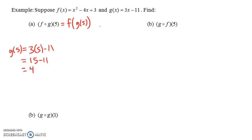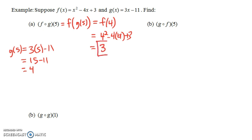So g of 5 is 4. F of g of 5 is like f of 4. We have a formula for f, so let's plug in 4: 4 squared minus 4 times 4 plus 3, so that's 16 minus 16, which is 0, plus 3, which is 3. So f circle g of 5, or f composed with g of 5, ends up being 3.